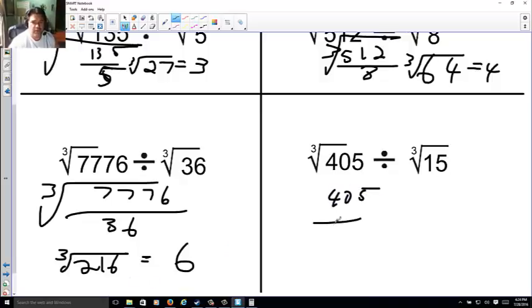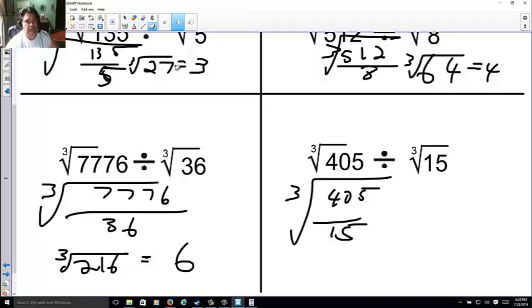And finally, 405 over 15 all in a cube root. Well, 405 divided by 15 is going to be 30. Let's see. 30, 45. No, it's not going to be 30. What you thinking? It's going to be 20. Makes 300. Makes 105 divided by 15. Should make 7. I get 27. And the cube root of 27 is, again, 3.